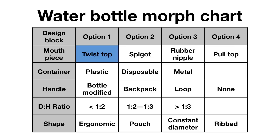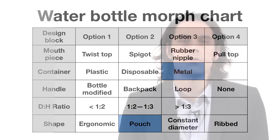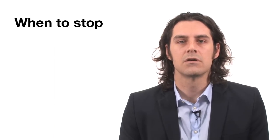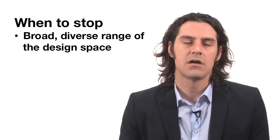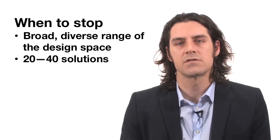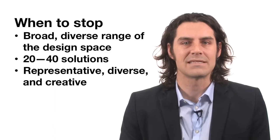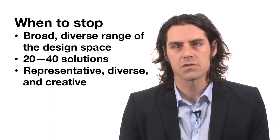One example is that a twist top on a backpack is just simply impractical. It's also unreasonable to expect that your pouch, carried on your back like a dromedary, would be made of metal. Students often struggle with when to stop generating solutions using their morph charts. Your goal should be to generate enough solutions to get a broad and diverse range of the design space itself. Often this means 20 to 40 solutions which are representative, diverse, and creative.